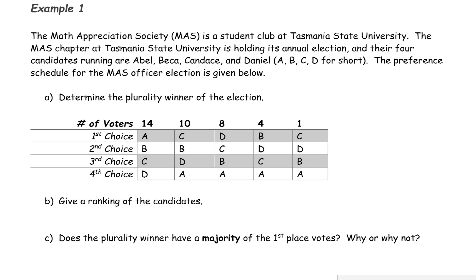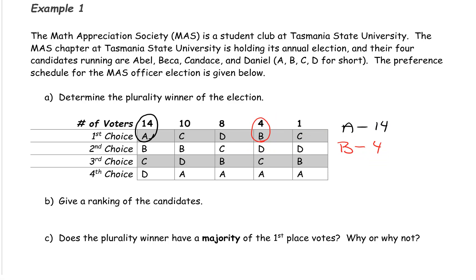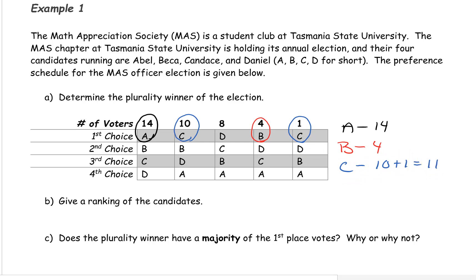Candidate A has 14 first place votes. Candidate B has 4 first place votes. Candidate C has 10 votes here and 1 vote here, so that's 10 plus 1, or 11 first place votes. And lastly, Candidate D has 8 first place votes.